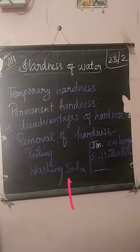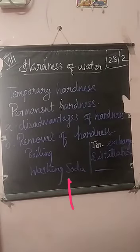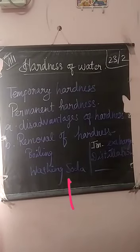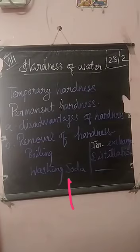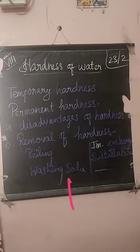Then temporary hardness and permanent hardness. Temporary hardness is due to the presence of carbonate and bicarbonate salts of calcium and magnesium — calcium carbonate, calcium bicarbonate, magnesium carbonate, and magnesium bicarbonate. Permanent hardness means that water contains calcium chloride, calcium sulphate, magnesium chloride, or magnesium sulphate.